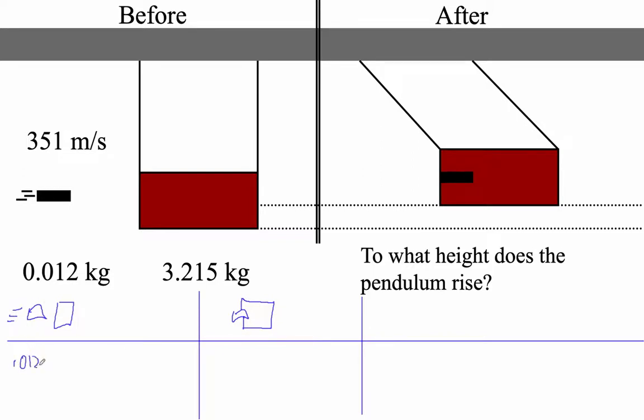So I'm going to go 0.012 times 351. The block isn't moving to begin with. And that equals, what is that combined mass? 3.215 plus 0.012, 3.227 times V. So let's figure out that V. 0.012 times 351 divided by 3.227. I get the velocity is 1.305237 meters per second.